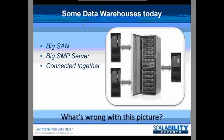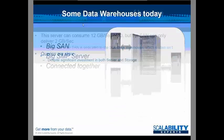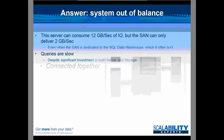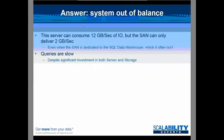The answer to that is that we've gotten an out-of-balance system. The SAN was originally set up and configured to handle 2 gigs per second of data access. However, when the data warehouse gets put on there, we need 12 gigs per second to actually access the data to support our queries. The queries are becoming slower and slower, and end users are starting to complain about it.